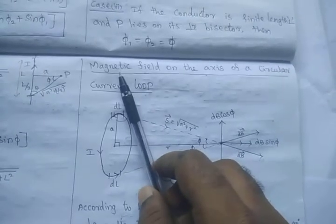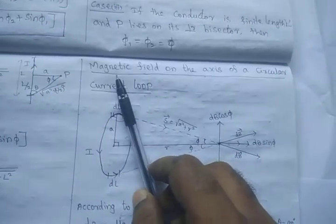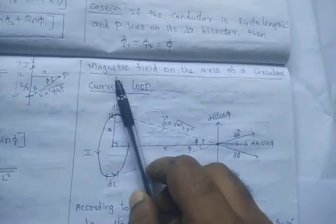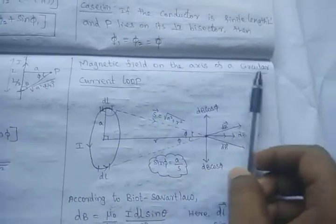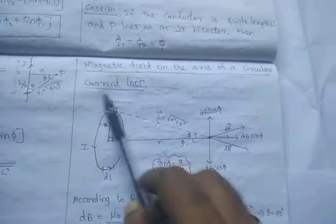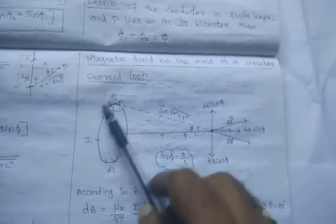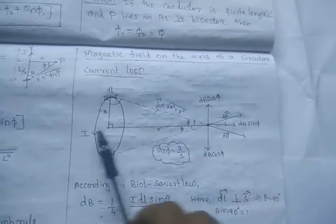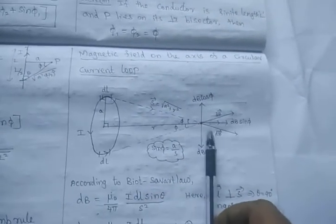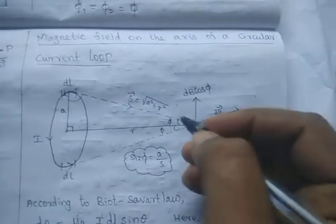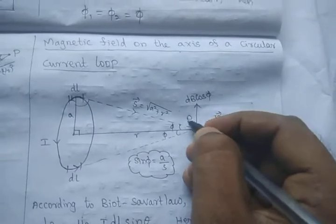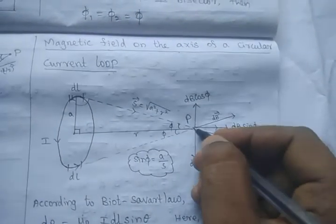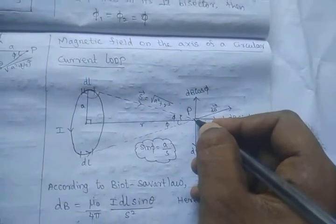Dear students, now we are going to derive the expression for the magnetic field on the axis of a circular current loop. This is a circular current loop, and this is the axial point P — at this point P, we want to find the total magnetic field.